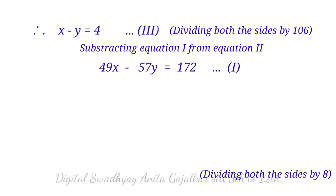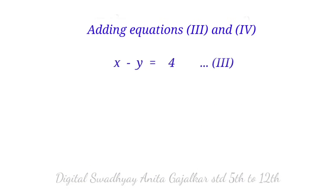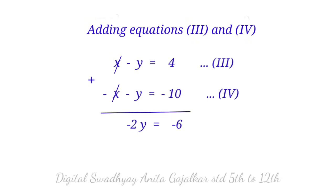Subtracting equation 1 from equation 2: 57x minus 49y equal to 252, minus (49x minus 57y equal to 172), giving minus 8x minus 8y equal to minus 80. Dividing both sides by 8: x plus y equal to 10 (equation 4). Adding equations 3 and 4: x minus y equal to 4, plus x plus y equal to 10, giving 2x equal to 14, so... Alternatively: minus 2y equal to minus 6, therefore y equal to 3.